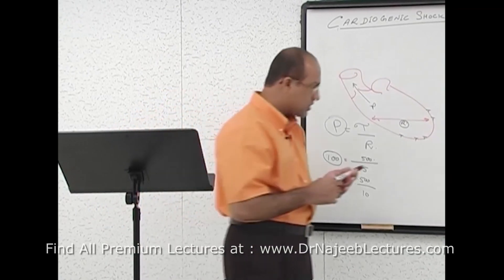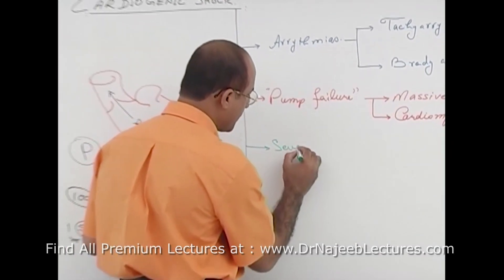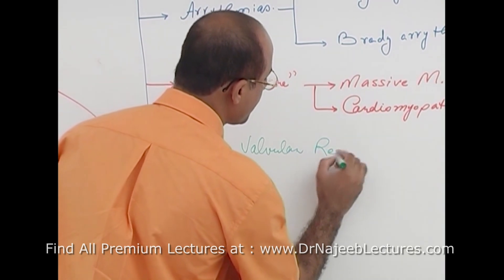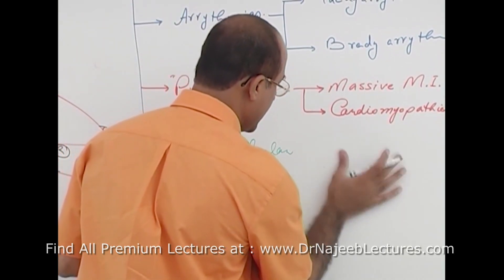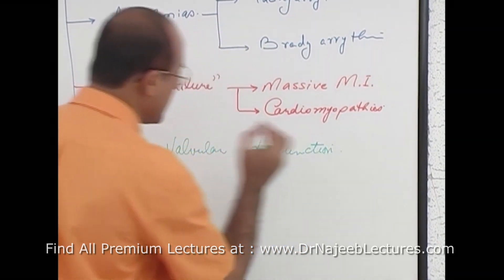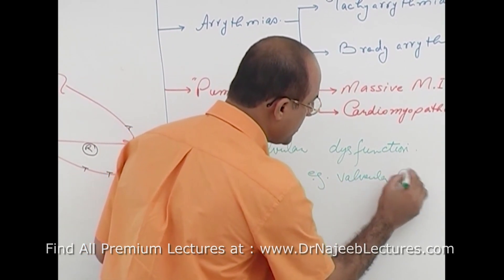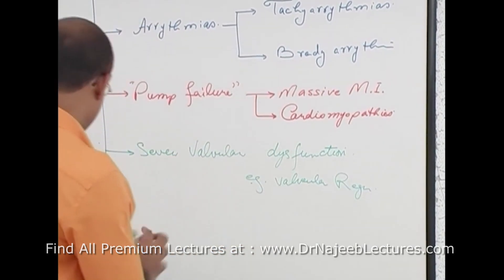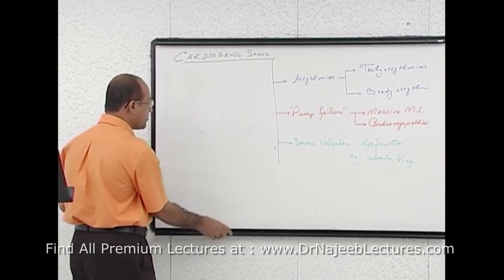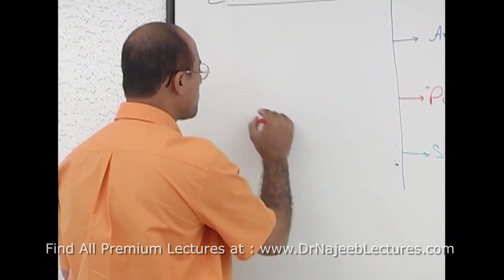Another condition that can lead to cardiogenic shock is severe valvular failure — specifically, severe valvular dysfunction such as regurgitation. If a valve becomes acutely regurgitant, cardiac output cannot be maintained.